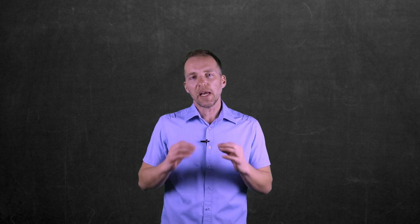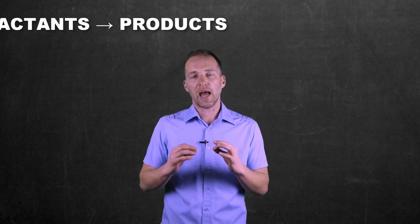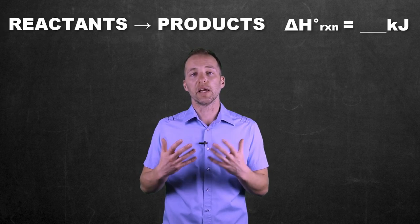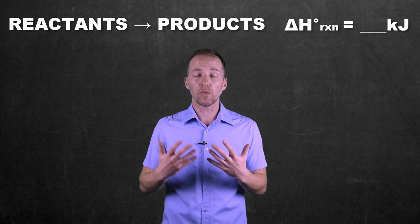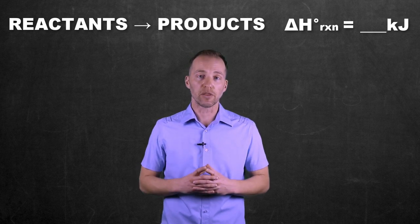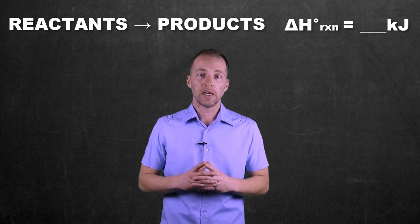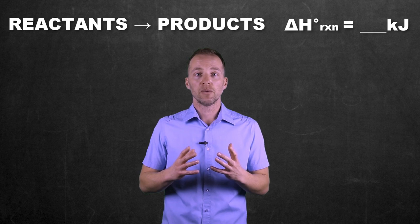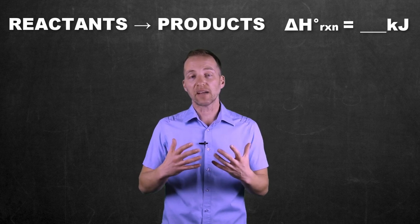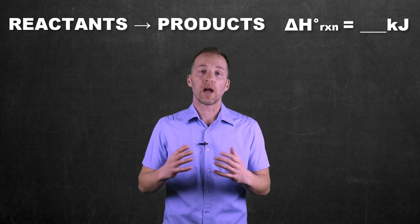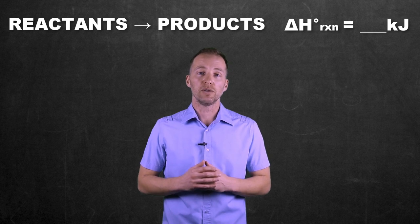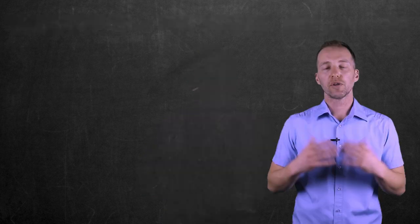If we take a look at a thermochemical equation, what we need to understand is that there are multiple ways that we can actually quantify or come up with a value for the enthalpy change. One of those ways requires that we actively and empirically try to establish what these values are, using something called calorimetry.